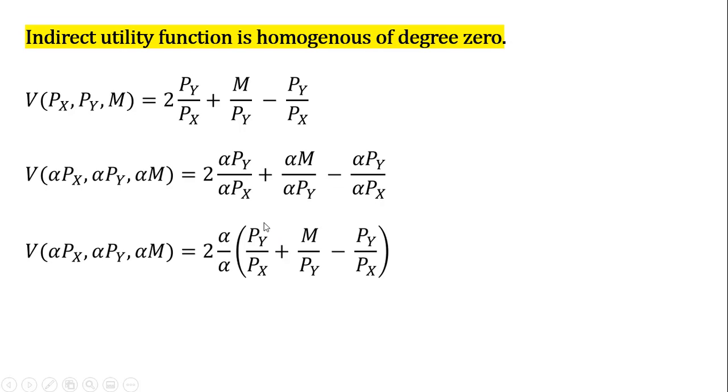If we factor out here on the right-hand side of the equation, we'd get this. Alpha divided by alpha is just one. There is indeed no difference between the utility from doubling all prices and income and not doing that. The indirect utility function is unchanged.